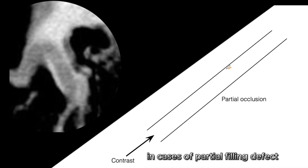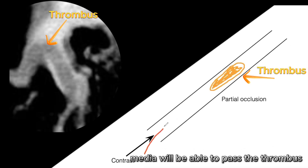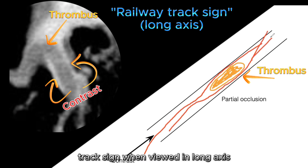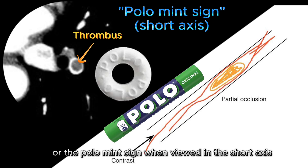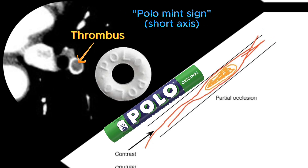In cases of partial filling defect, some contrast media will be able to pass the thrombus. This gives the appearance of the so-called railway track sign when viewed in long axis, or the polo mint sign when viewed in the short axis.